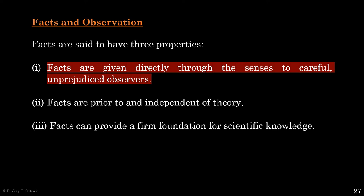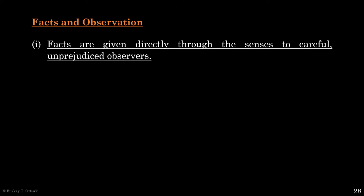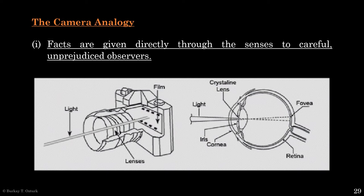Let's start with the claim that facts are given directly through the senses to careful, unprejudiced observers. The idea behind this thesis is that we know facts through our sensory faculties, which relay to us a perfect copy of the information in our environment. Here, the camera analogy comes handy because the easiest faculty to explain how this is supposed to work is vision. Human vision, according to this analogy, works just like an old-fashioned film camera.